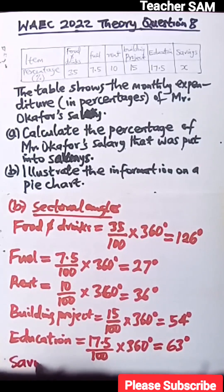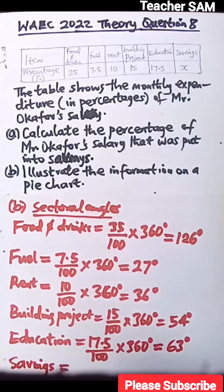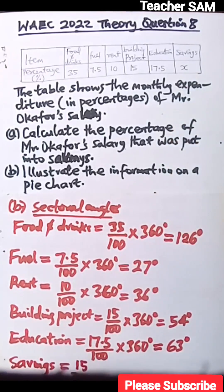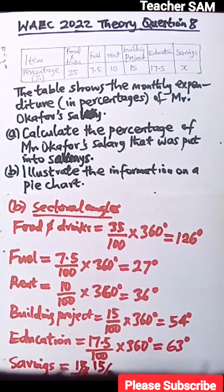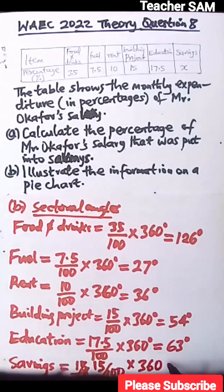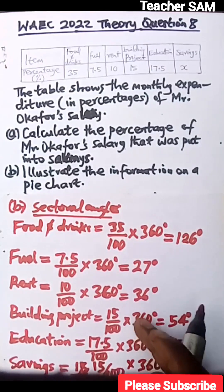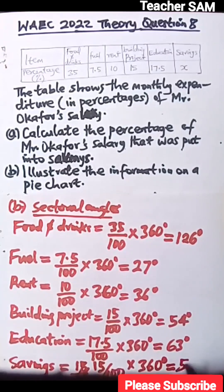For savings, we already calculated X = 15%, so the angle is (15/100) × 360° = 54 degrees — the same as building project since both are 15%. So we have 54 degrees for savings as well.